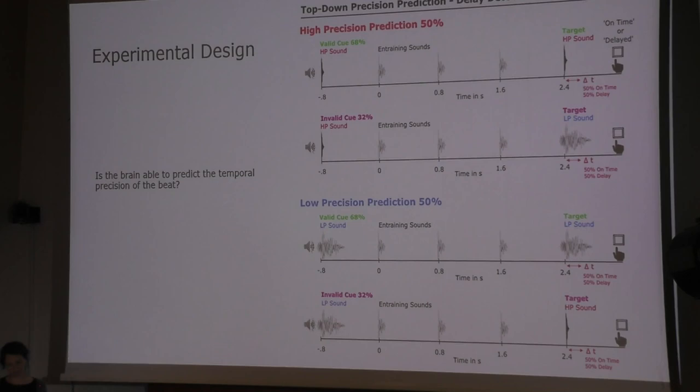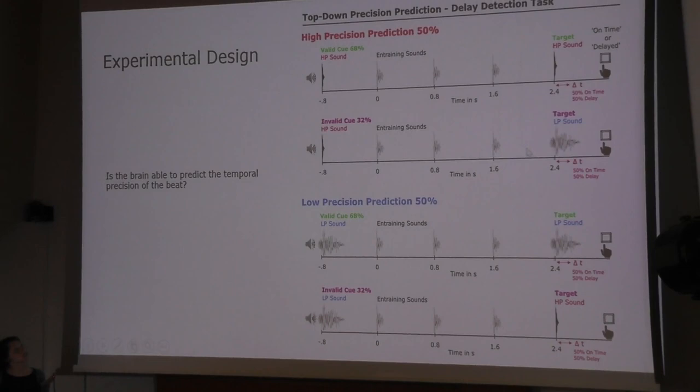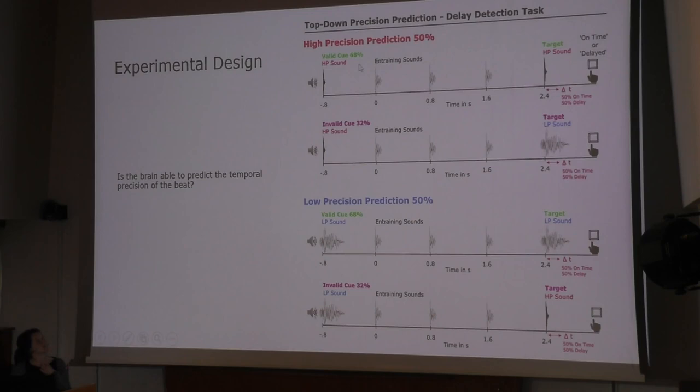The participants had to detect the delay of a target sound at the end of the sequence. In the valid case, the sound cues were valid, so the acoustic shape of the cue matches the target sound. In the invalid case, the cue does not match the target sound, so you could also say in this case the listener predicted the wrong temporal precision.